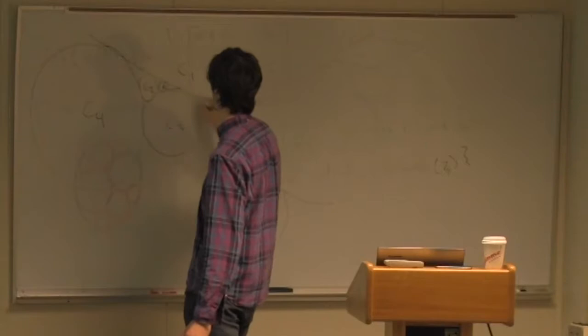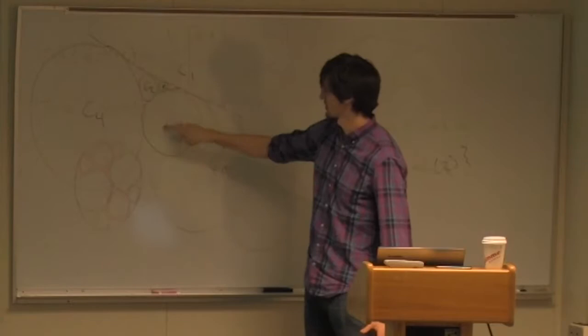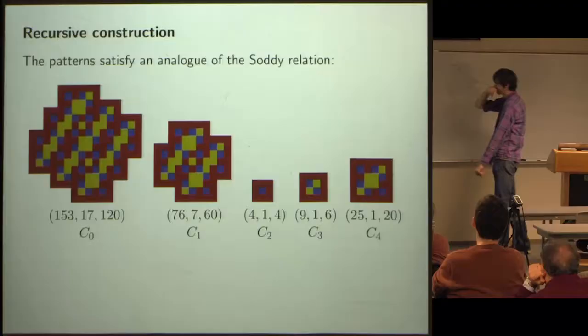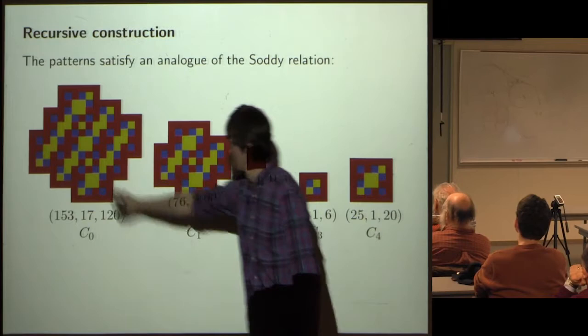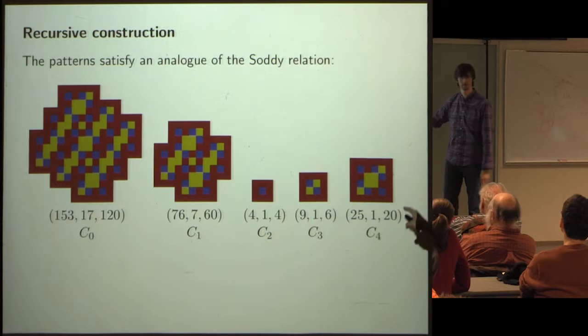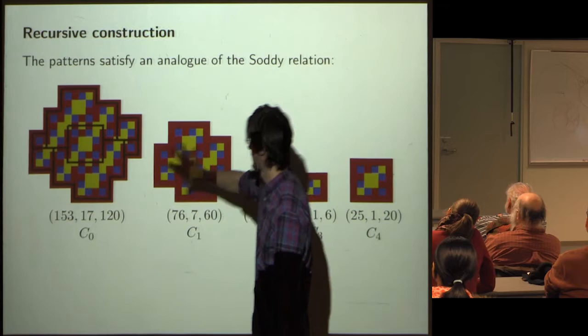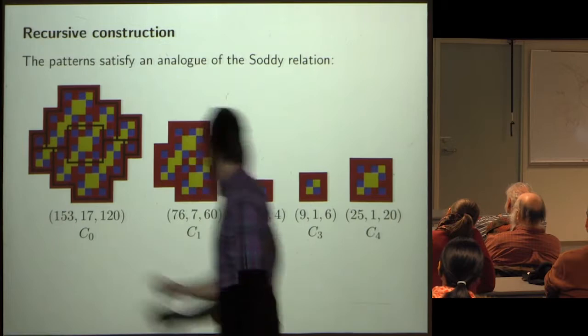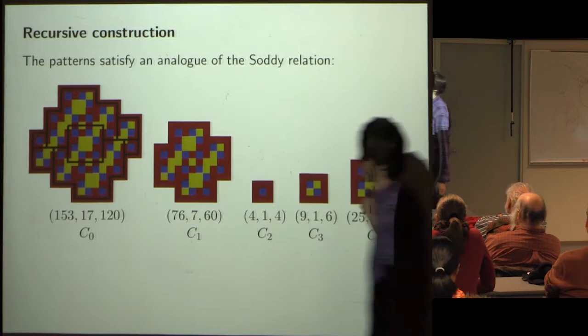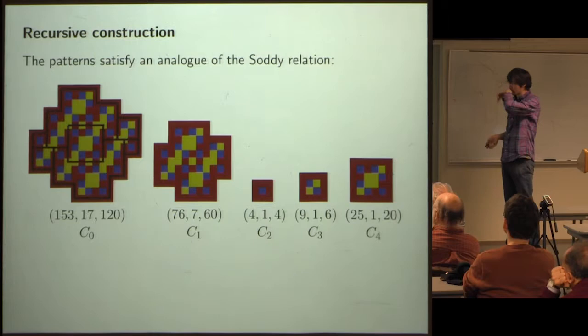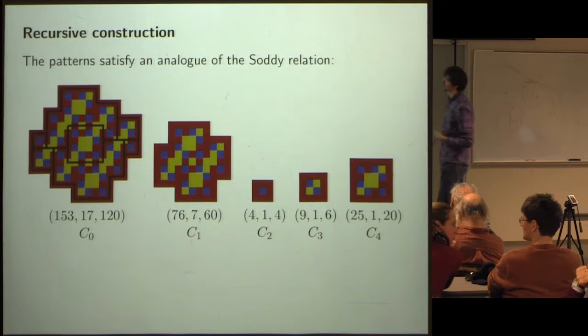It turns out that the pattern for the new Soddi circle C₄ equals twice the sum of the three original patterns minus the pattern for C₀. In what sense? In the sense of just gluing them together: the pattern for C₄ appears twice, as does the pattern for C₀, and those two copies overlap exactly on a copy of one of the original patterns. So we subtract that one.